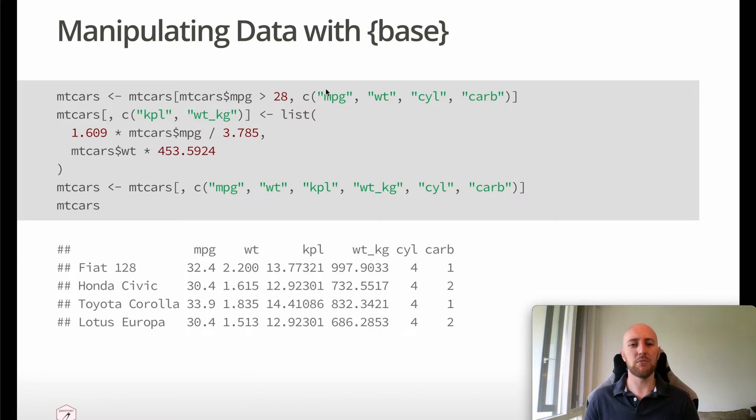Here I've got some code written in base R and I'm working with the famous mtcars dataset. I'm filtering some data, selecting some columns, and creating some new columns — here I've got the kilometres per litre, the weight in kilograms, and then finally I'm selecting some columns in a particular order and I get this resulting dataset. So this is great — what's the problem, why write Pawman?